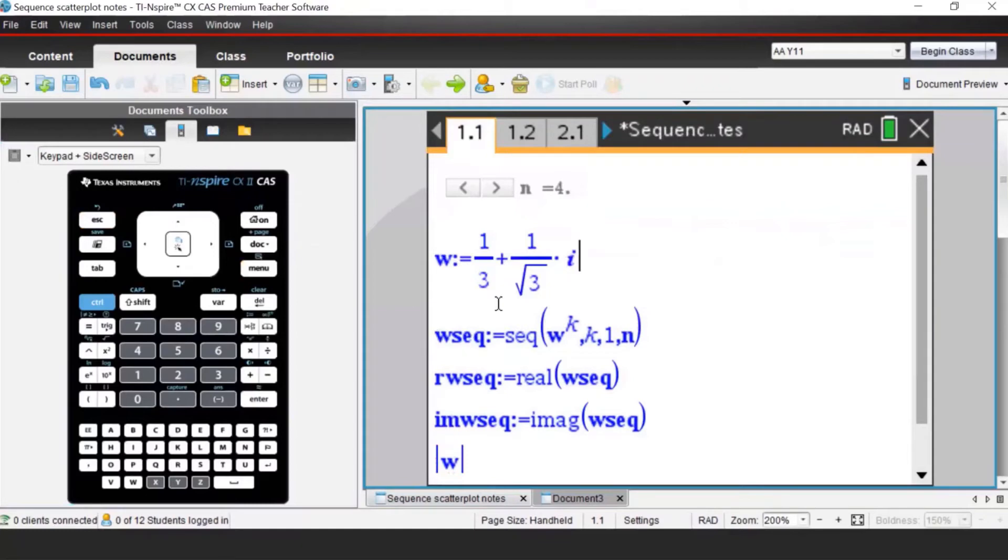And now what we are doing, and the detailed instructions are on the student's worksheet, we're defining the sequence of numbers. So W sequence is such that we have W to the power of K. The variable is K from 1 to N.